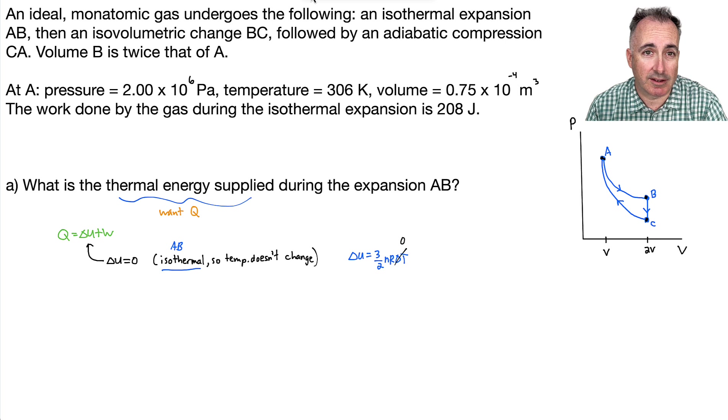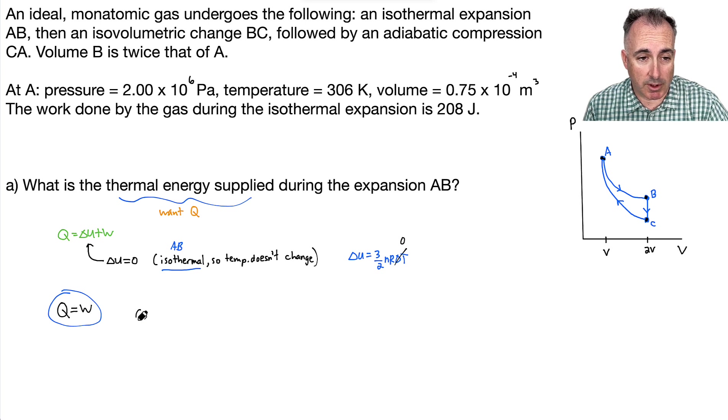Do you see that? So that means then delta U is zero. Okay, why do we care about that? Well, that's because now we can say Q, which we want, is just going to be equal to W. Do you see that? Because delta U is zero, we just have Q equals W. What can we state from this? Remember, maybe I'll write it like this. So Q equals the work done.